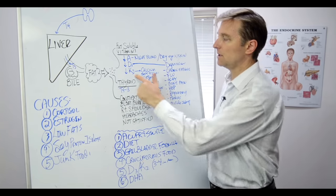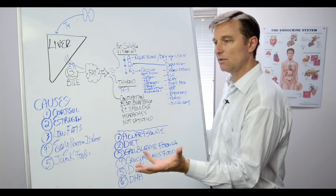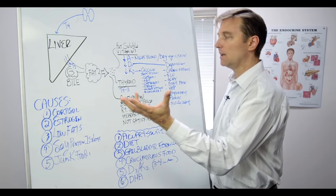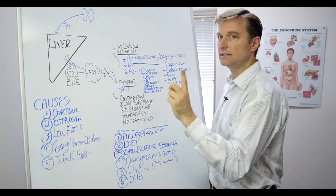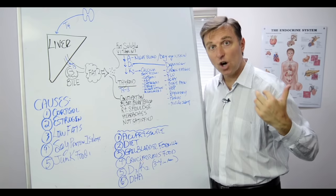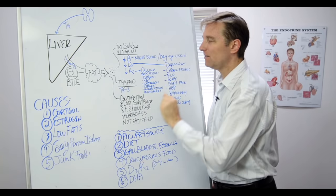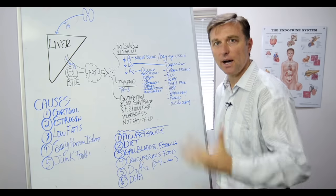So also deficient in K2 will cause you to have osteoporosis because vitamin D3 increases the calcium, but it doesn't tell it where to go. K2 takes the calcium and drives it where it should go out of where it should not be. So many people have this calcium that's plugging up their entire body.